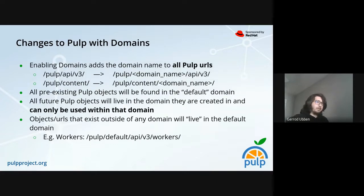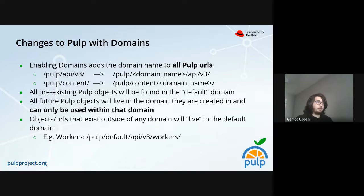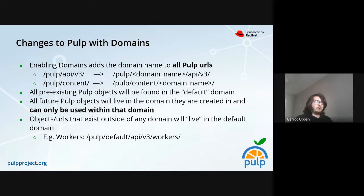When you enable the domains feature, the domain name gets added to all the PULP URLs. In the PULP API, the domain name comes after the API root and right before the API v3. For the content app, the domain name comes after the content path prefix, which is usually 'pulp/content'. This is necessary because every operation needs to take place within a domain. If you're upgrading and enabling domains, all current PULP objects will be found underneath a default domain called 'default', and all future PULP objects will live in the domain they were created in and can only be used within that domain.